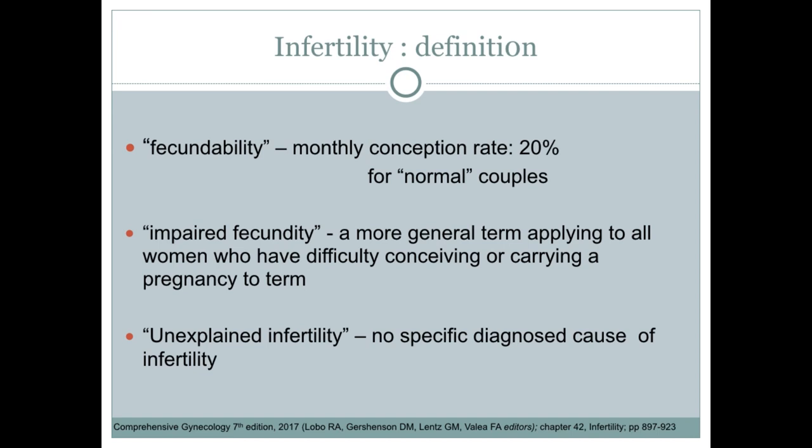Fecundability is a term we use to denote the monthly conception rate, and this is pegged at 20% for normal or fertile couples. This means that for a normal, fertile couple, their chances of getting pregnant per cycle is just about 20%. This figure is very important for all couples seeking fertility to know because it will alleviate unrealistic expectations of immediate success with various therapies, which can only approach 20% per cycle.